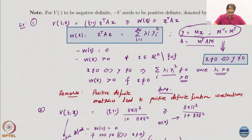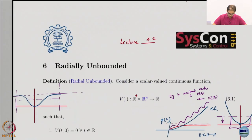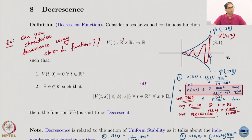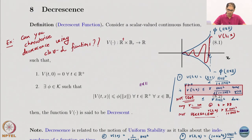We also talked about radial unboundedness. Once we had radial unboundedness, we also spoke about decrescence, for which we did not give any easier characterization — the easier characterization is not easy at all. If you are interested you can look at Vidyasagar's book to see this, but it is not very easy. It would be very beneficial for all of you to go back and look at Vidyasagar's book — the Lyapunov stability analysis chapter. A lot of the material here is derived from there; it is one of the most comprehensive and mathematically precise descriptions.